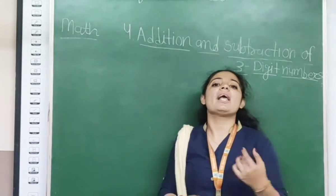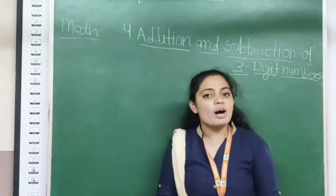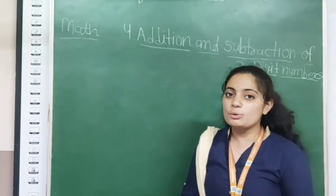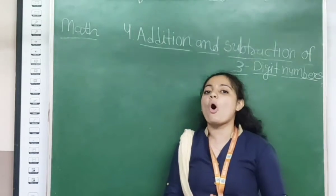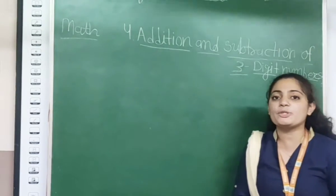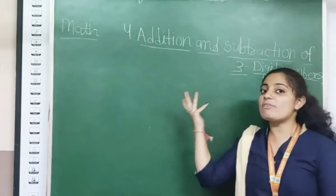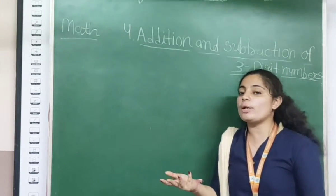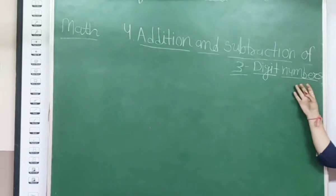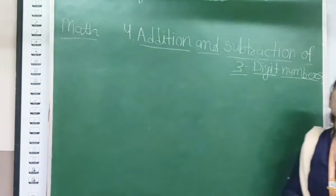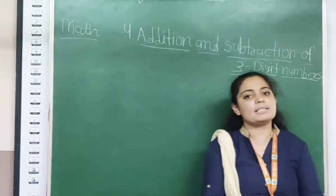Yes students, in Maths Check we have completed chapter number 1, chapter number 2, and chapter number 3. Now we are on our new chapter, chapter number 4. So let's see what is the name of chapter number 4 — addition and subtraction of 3 digit numbers.